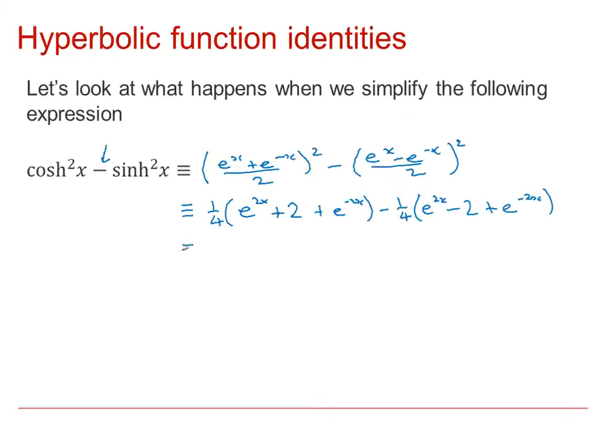And if we keep the quarter and expand the brackets and collect like terms, there's an e to the 2x and a minus e to the 2x. There's an e to the minus 2x and a minus e to the minus 2x. And all we're left with is 2 minus minus 2. So we end up with 4 divided by 4, which is 1. So we've proved that cosh squared x minus sinh squared x is identical to 1.